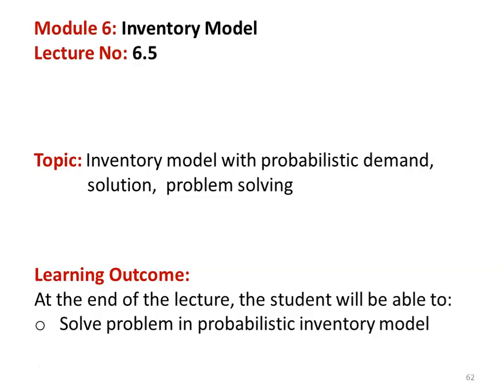In the earlier four lectures, we discussed the deterministic inventory model, where the demand is known. But practically, there is no such model. In an inventory system, the required stock level, the demand, and the consumption rate are not known well in advance. They vary from time to time, season to season, and country to country. That is what leads us to the inventory model with probabilistic demand.